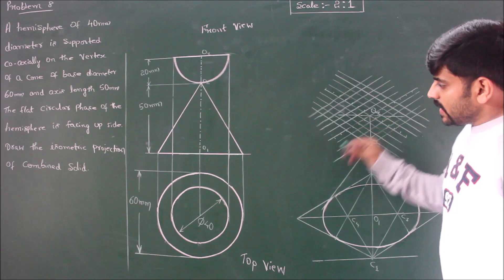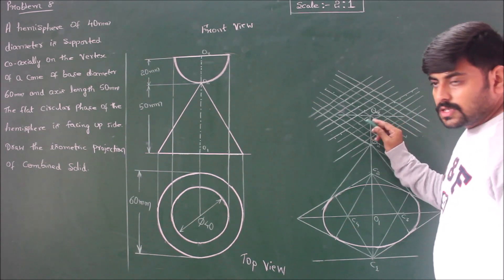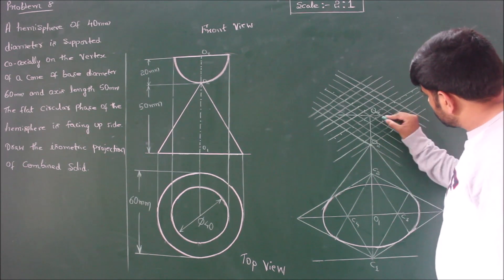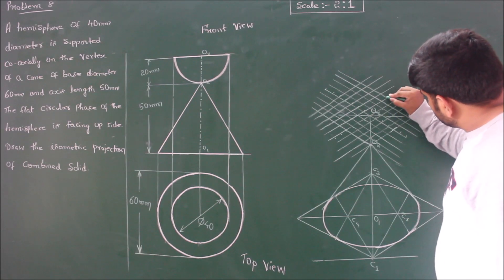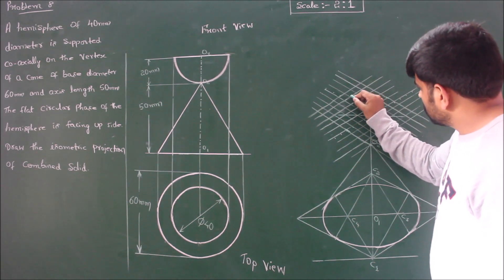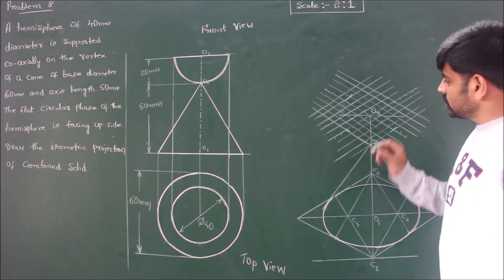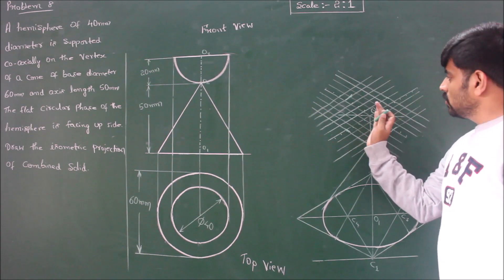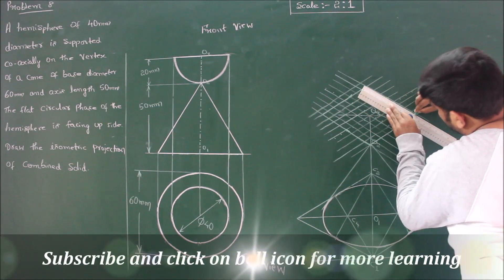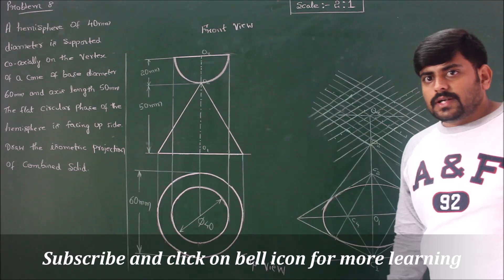To consider the square of 4 boxes × 4 boxes, choose 2 boxes up, 2 boxes down, 2 boxes towards left, and 2 boxes towards right. Note: I am choosing 4 boxes because I am drawing at a scale of 2:1; you should choose 2 boxes up, 2 boxes down, 2 boxes left, and 2 boxes right and complete the square. This completes the isometric projection of the square enclosing the circle of diameter 40 mm.